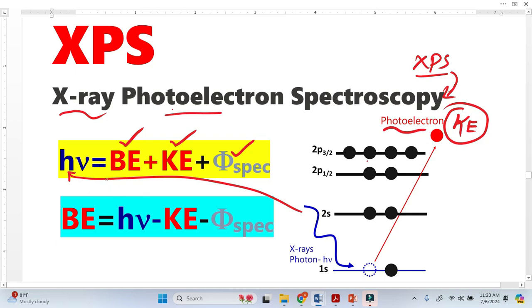When we rearrange this equation, the binding energy is equal to the photon energy, which is known, minus the kinetic energy from the XPS detector minus the work function, which has a constant value. We can easily calculate the binding energy.